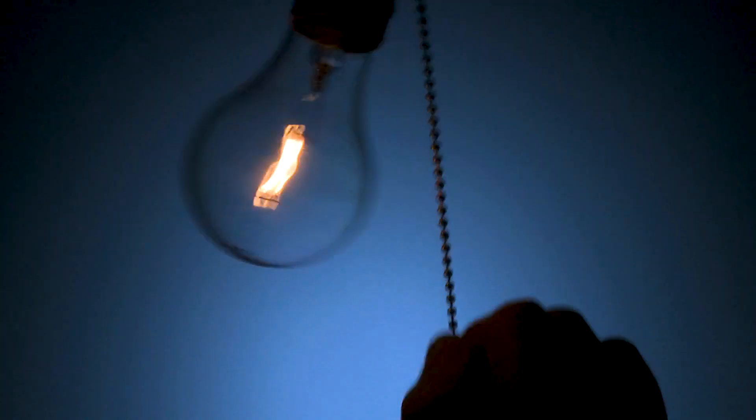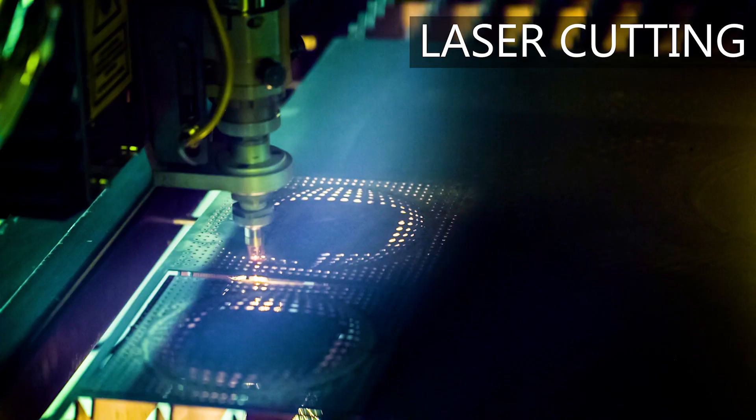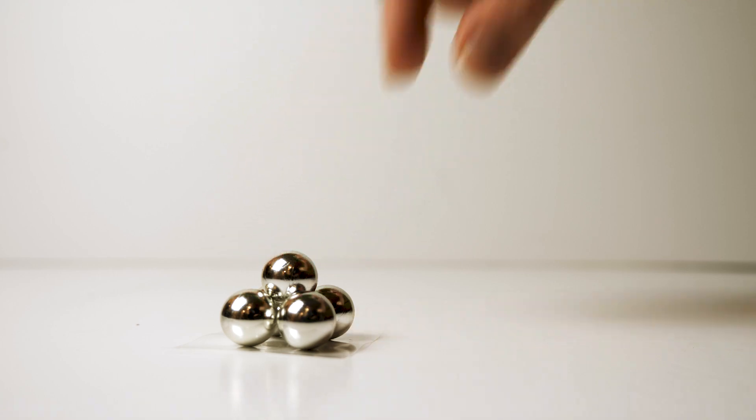Light can do much more than just help us see. It can transmit information, image microscopic objects, and even cut through metal. But did you know that light can also be used to pick things up and assemble them?